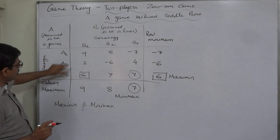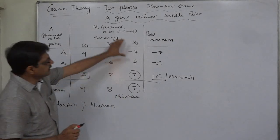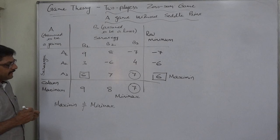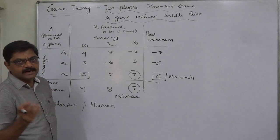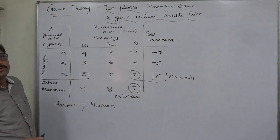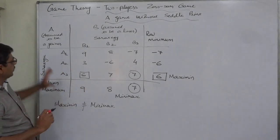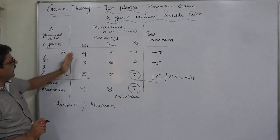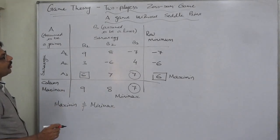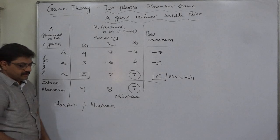The maximin value of 6 is situated at A3 B1 — strategy A3 for A and B1 for B — while the minimax value is situated at A3 B3, meaning strategy A3 for A and B3 for B. The maximin and minimax values are not situated at a single geographical point of the payoff matrix. That means there is no unique saddle point, because ultimately the saddle point is a geographical point where the gain of A and the loss of B coincide at the same point.